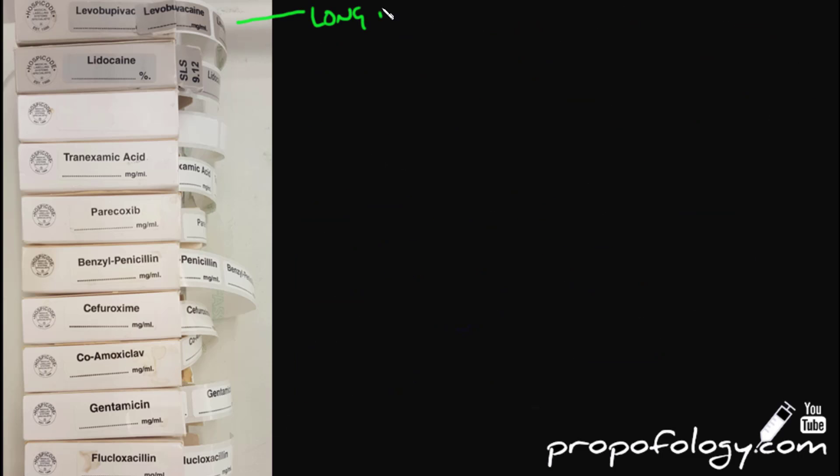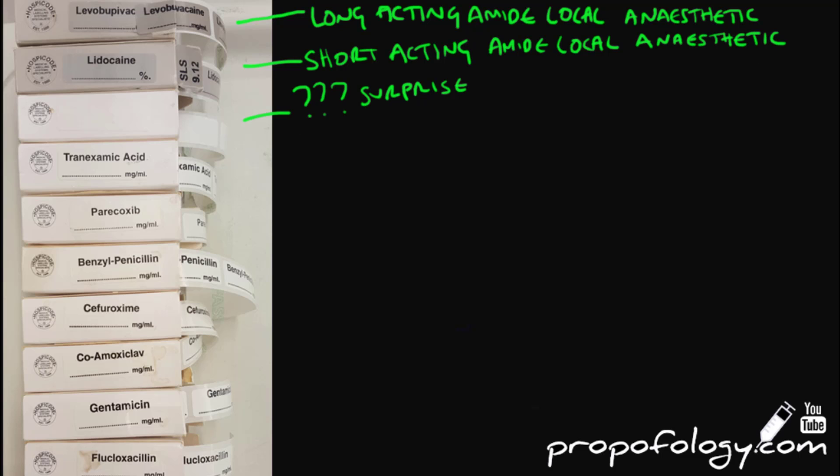Levobupivacaine is a long-acting amide local anesthetic. It's used whenever we're doing nerve blocks or regional anesthetics in theatre. Lidocaine is a short-acting amide local anesthetic. It's used for skin and other localized procedures. Levobupivacaine takes a longer time to work than lidocaine, and all local anesthetics are sodium channel blockers.